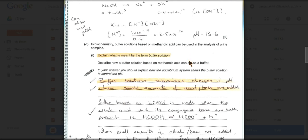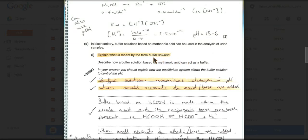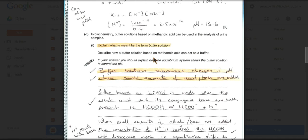So we've got to talk about how buffers based on methanoic acid work. Explain what is meant by the term buffer. So that'll be your definition. And describe how buffers based on methanoic acid act as a buffer. So because they've specified a particular chemical, we must talk about this in our answer. And when I marked questions on this from my students, they just gave me just generic buffer solutions answer.